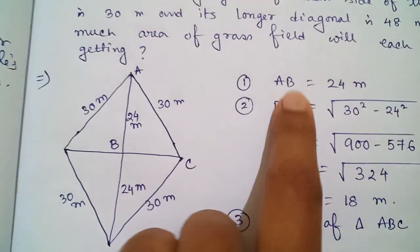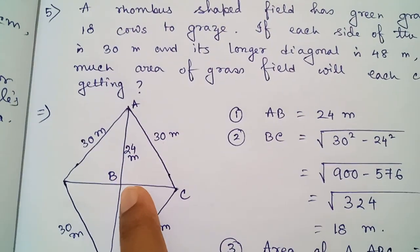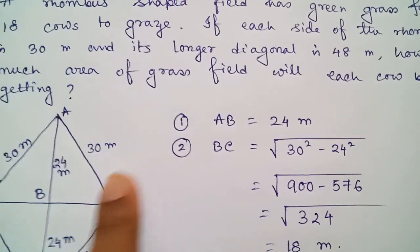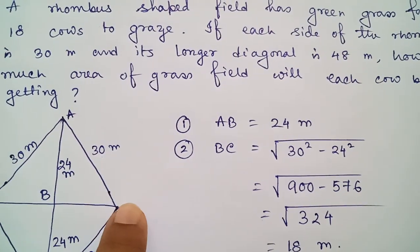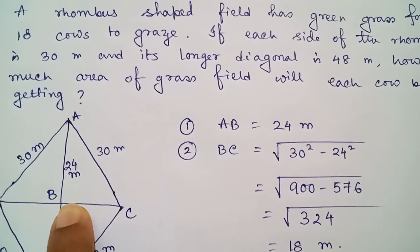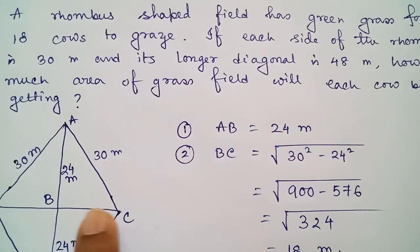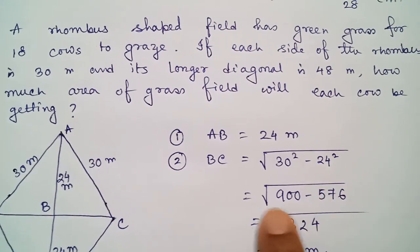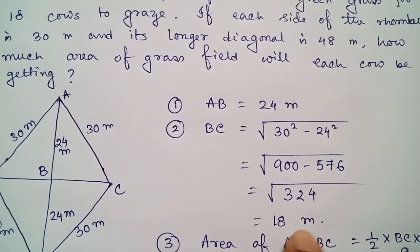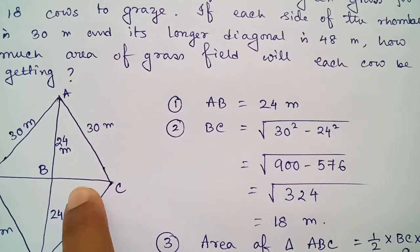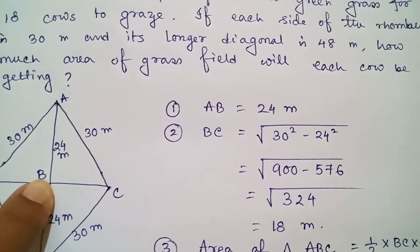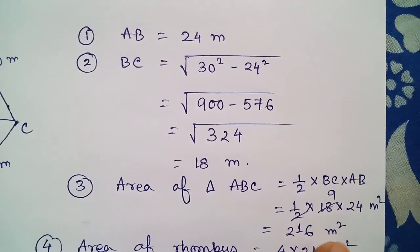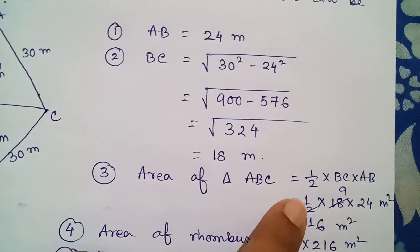Step one: AB will be half of the longer diagonal, so AB = 48 ÷ 2 = 24 meters. For the smaller triangle ABC, angle B is 90 degrees so it is a right triangle. By Pythagoras' theorem, BC = √(hypotenuse² − perpendicular²), giving BC = 18 meters. With base and height known, area of triangle ABC = ½ × base × height = 216 square meters.